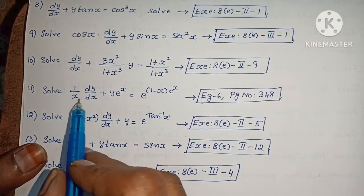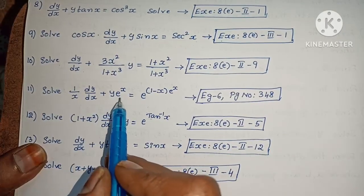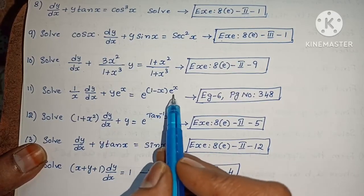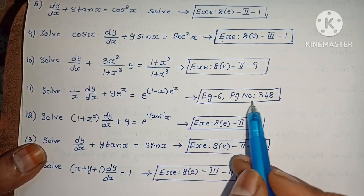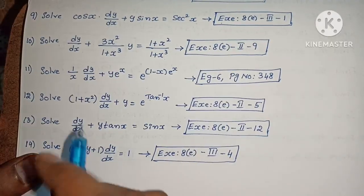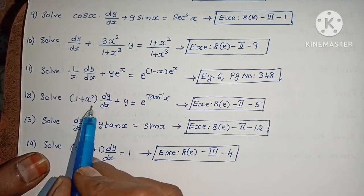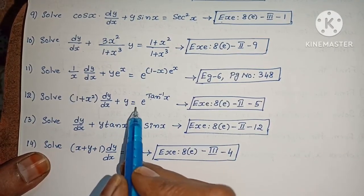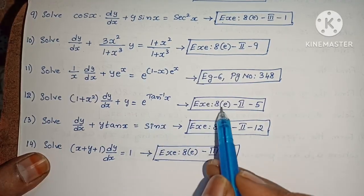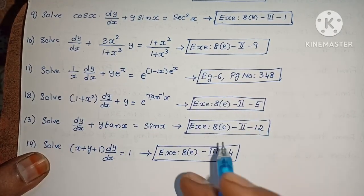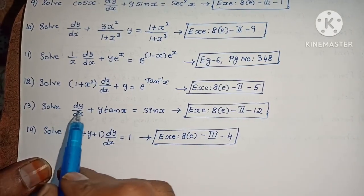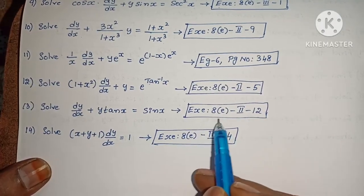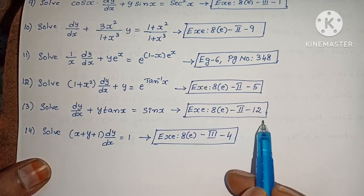Next, solve (1/x)·(dy/dx) plus y·eˣ equals e^(1−x)·eˣ. Example 6, page number 348. Next, solve (1 plus x²)·(dy/dx) plus y equals e^(tan⁻¹x). Next, solve dy/dx plus y·tan(x) equals sin(x).